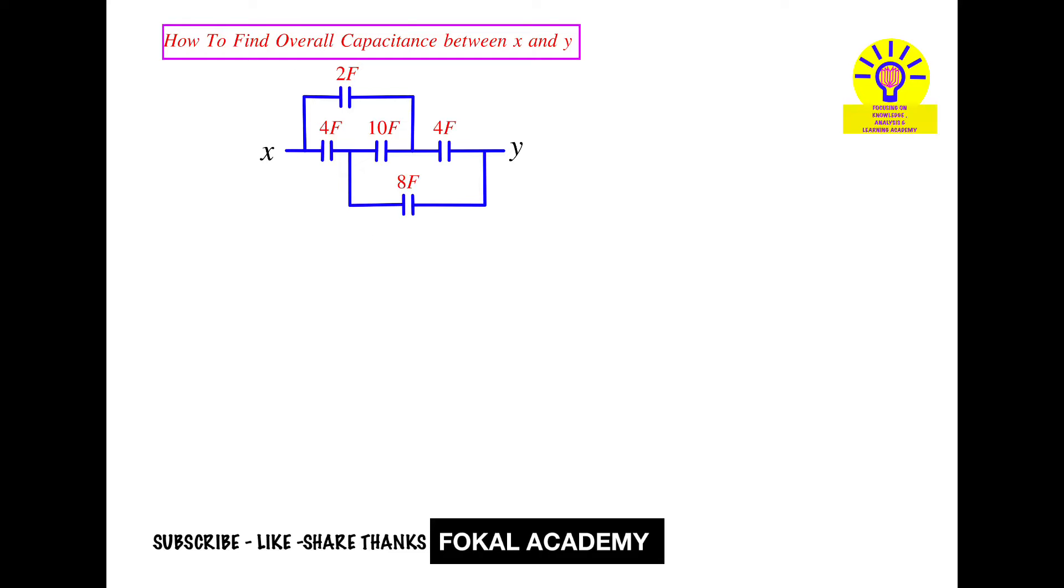So first of all here, observe here, this is a node A. It has two nodes. This is node A and this is node B. So between node A and node B, we have only one capacitor that is 10 Faraday. So first of all, draw that component, that is 10 Faraday we have.